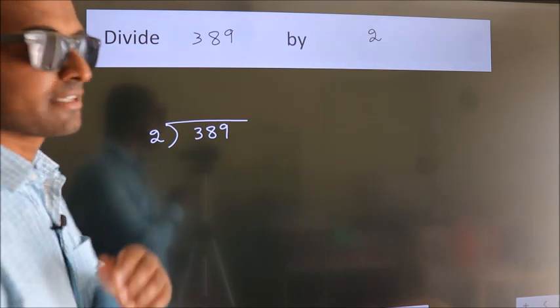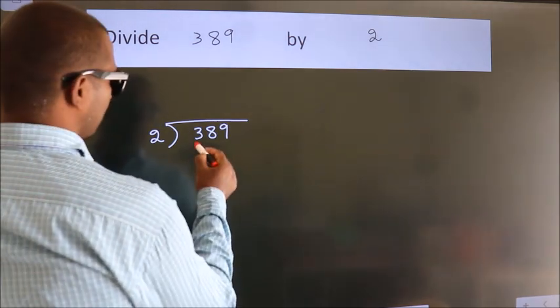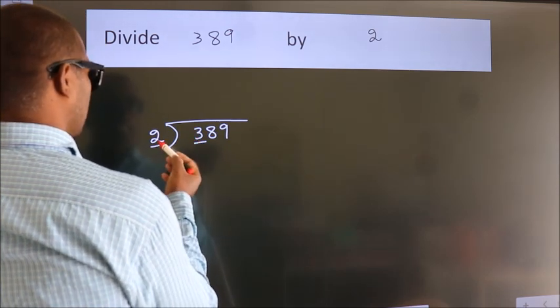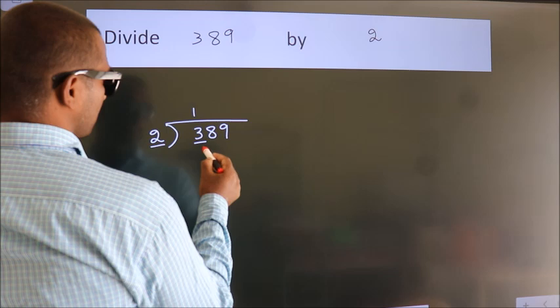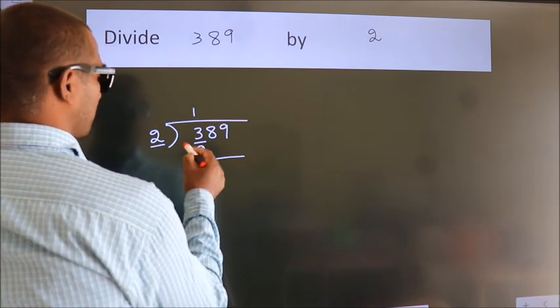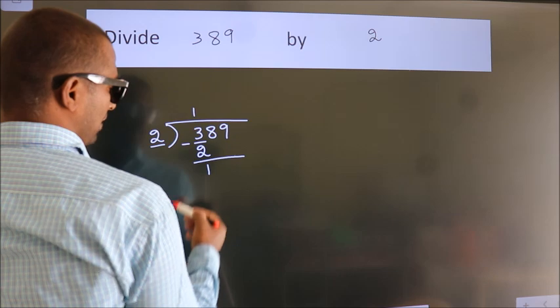Next, here we have 3, here 2. A number close to 3 in 2 table is 2 1s 2. Now, we should subtract. We get 1.